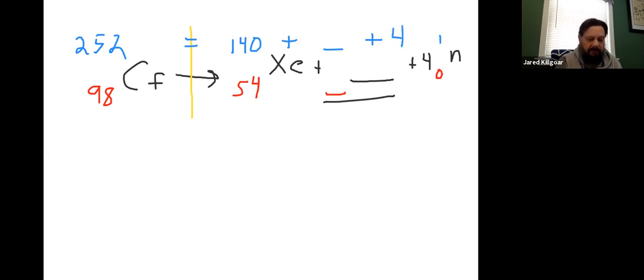So, your total mass on the left is 252. Your total mass on the right is 144. So, just figure out what's missing. You can set up an algebraic equation or you can solve it however you like. But, when you calculate the value that's missing right here, it is going to be 108.